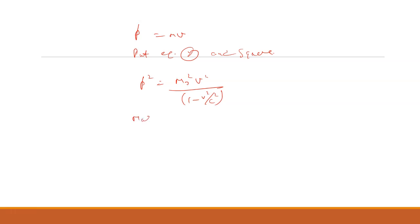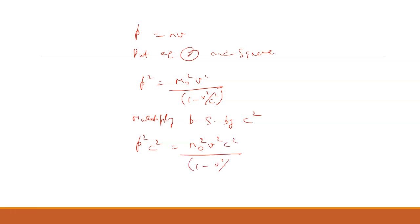Now multiply both sides by c squared. So it will become p squared c squared equals m₀ squared v² c² divided by 1 minus v²/c². This is equation number four.